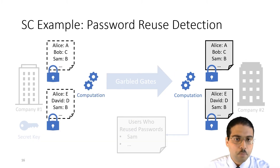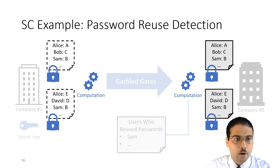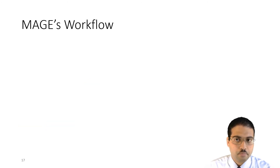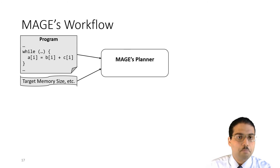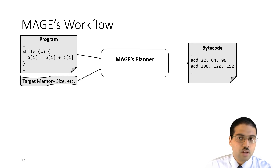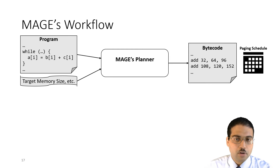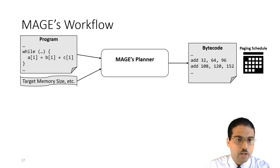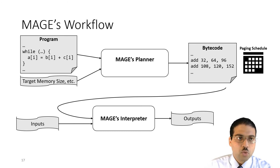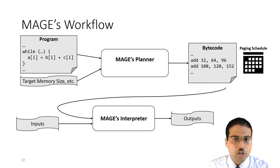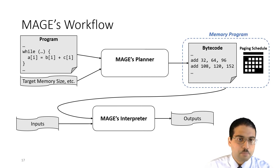Given the program and some attributes of the target machine, MAGE has a planner that outputs a memory management plan. Conceptually, that plan consists of a bytecode describing the computation and a calendar describing when to transfer memory between RAM and storage. At runtime, this memory management plan is used by an interpreter that reads the program's inputs, runs the secure computation, and computes its output. We refer to our memory management plan as a memory program, and our planning procedure as memory programming.